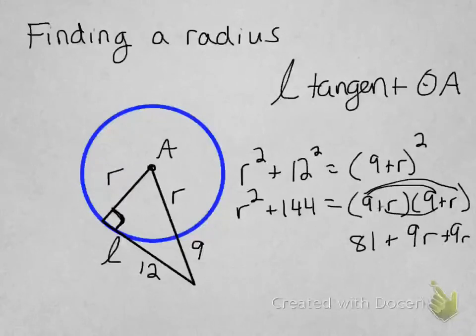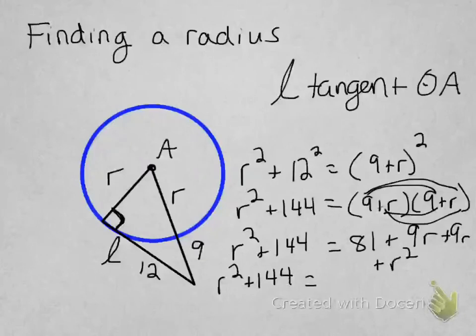And then plus 9r plus r squared equals r squared plus 144. So let's get rid of this, combine like terms. So r squared plus 144 equals 81 plus 18r plus r squared.